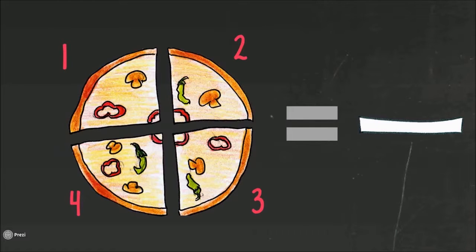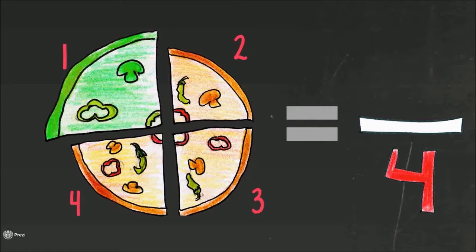In our example, this yummy pizza is split up into four slices. By looking at the numerator, we can see how many of the quarters we are looking at. In this example, our numerator is one, which is why we are looking at one of our four slices of pizza. One fourth of a pizza.